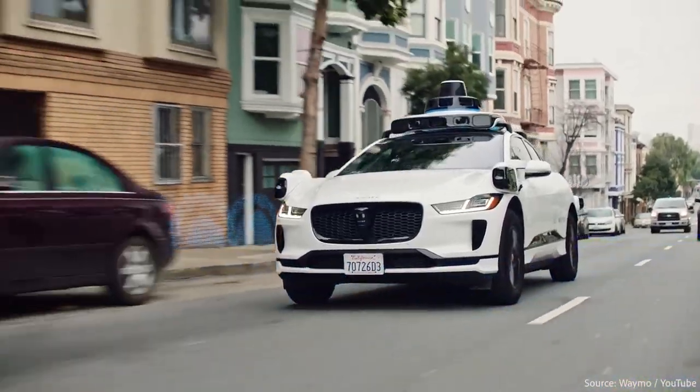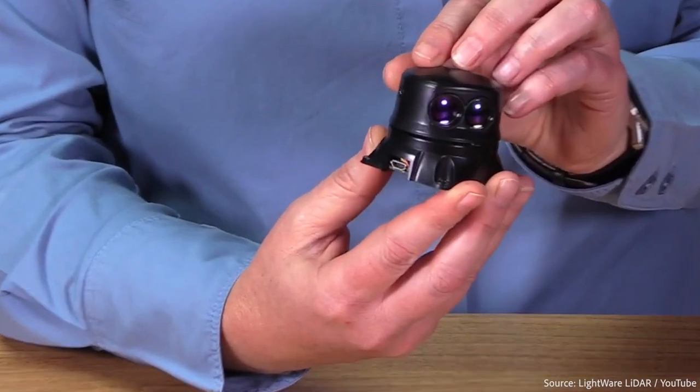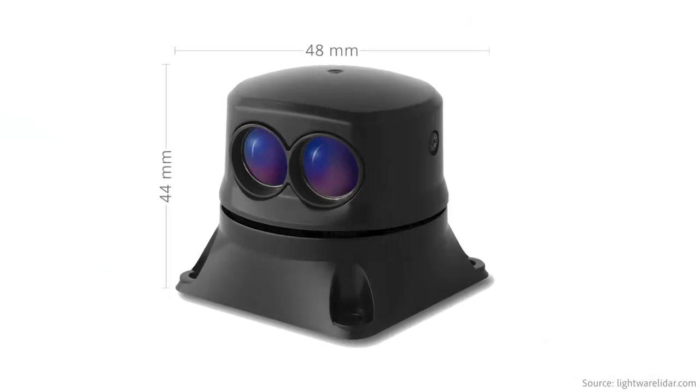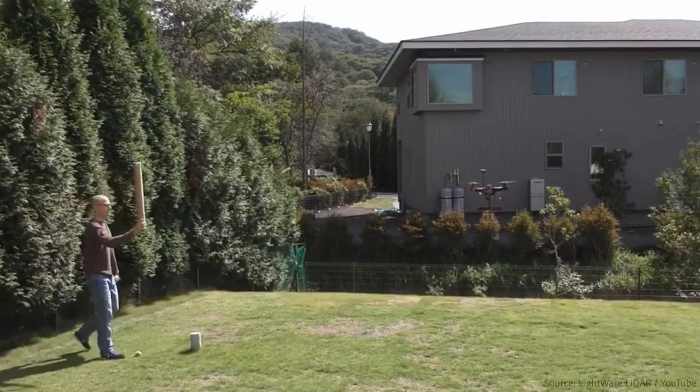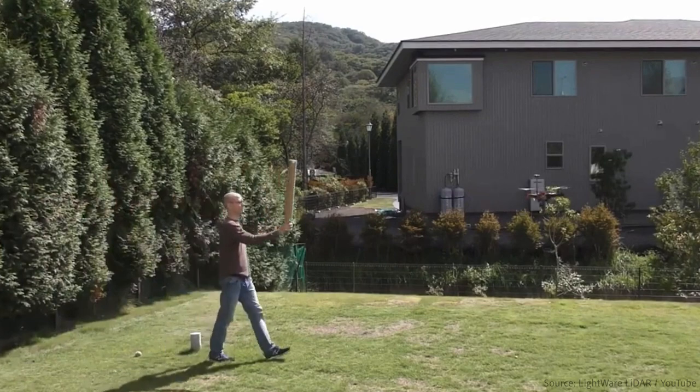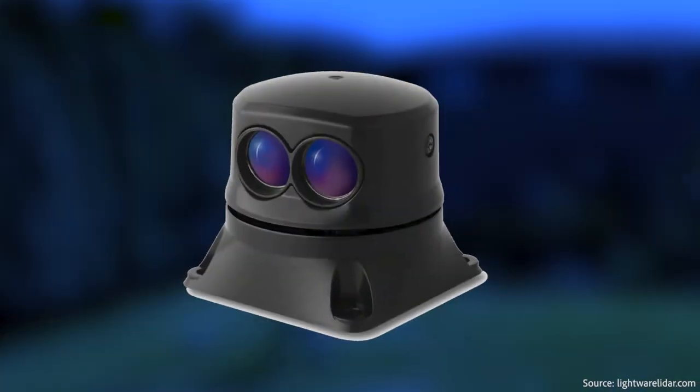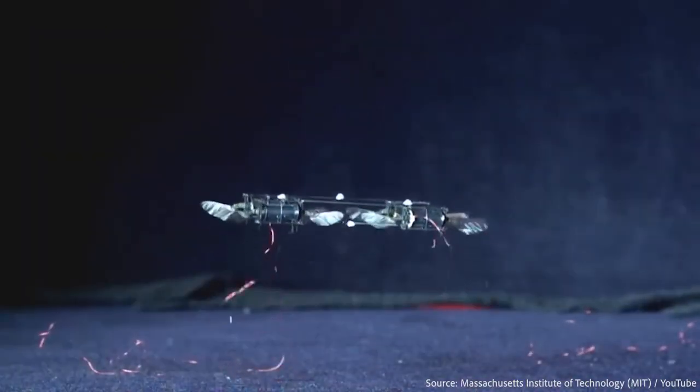LiDAR, which is used to power some self-driving cars, currently relies on large, clunky sensors. This has gotten smaller too, though. Here's the smallest, lightest scanning LiDAR available, called SF45. Here, the LiDAR is added to a small drone. This will need to be scaled down even further to be used by microbots.